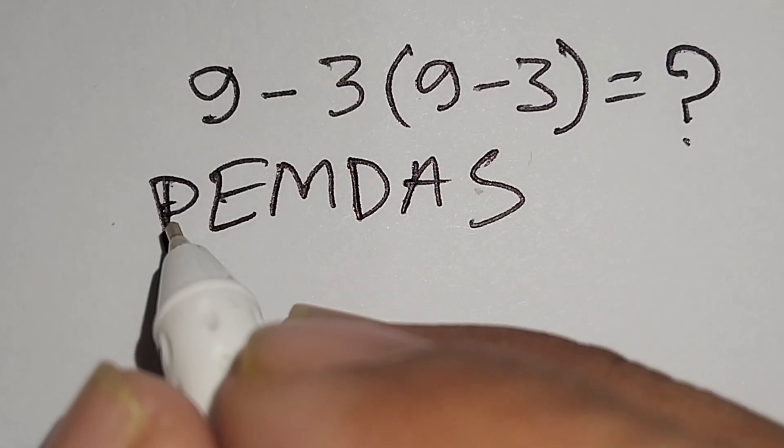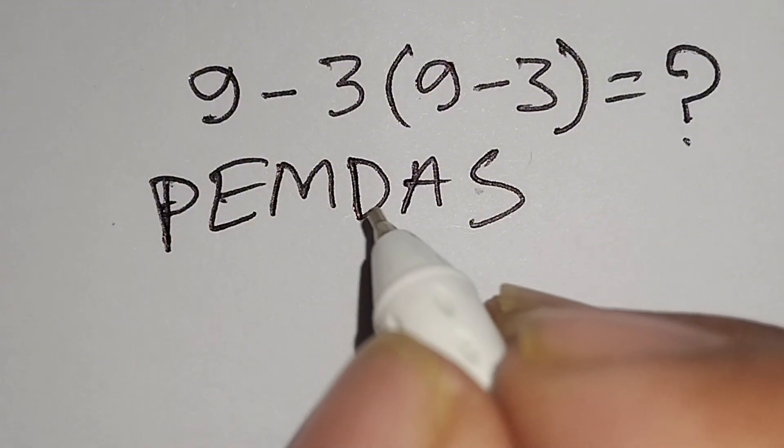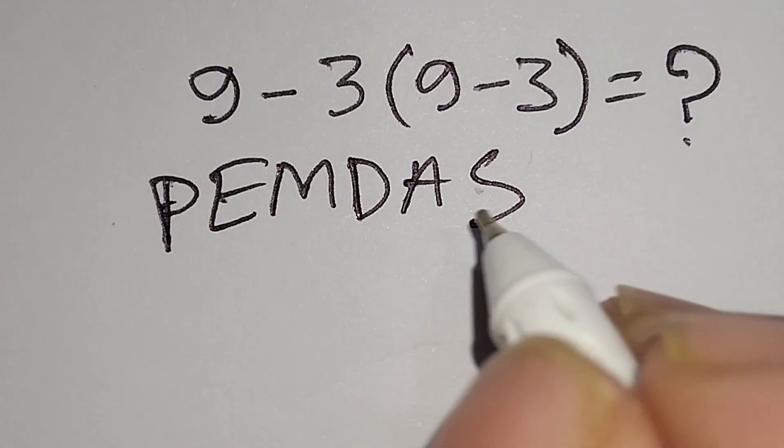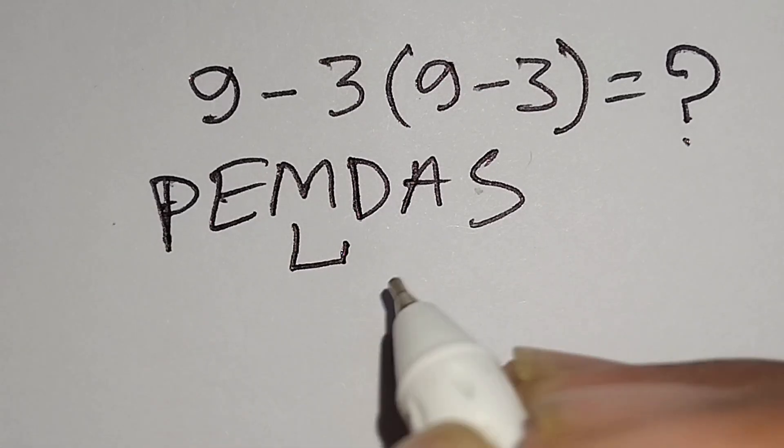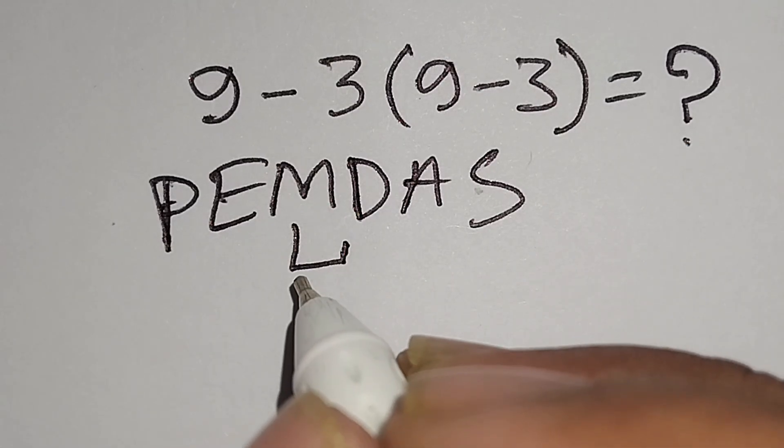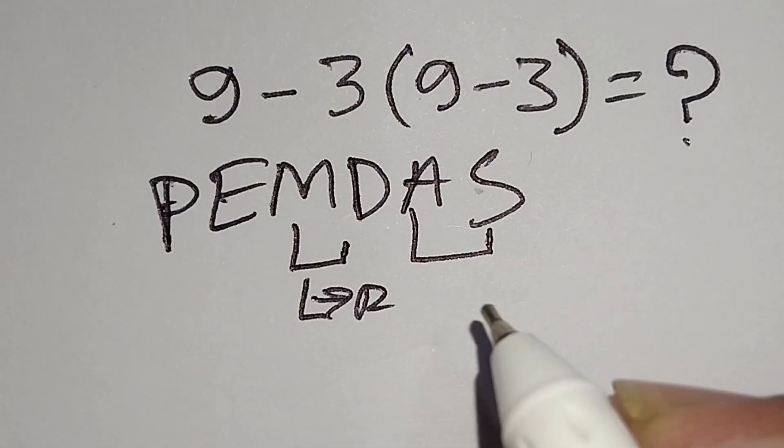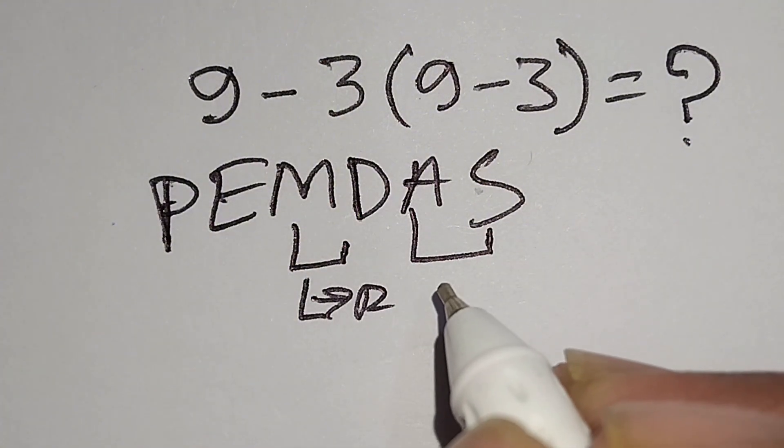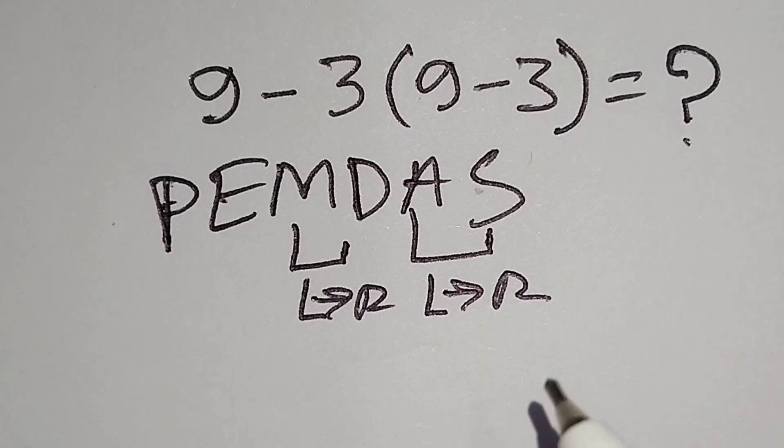According to PEMDAS rule, at first we have to work with parentheses, then exponent, then multiplication or division, then addition or subtraction. Remember, multiplication and division have same priority, for this we have to work left to right. And addition and subtraction have same priority, for this we have to work left to right also. Therefore, at first we have to work with this parentheses.